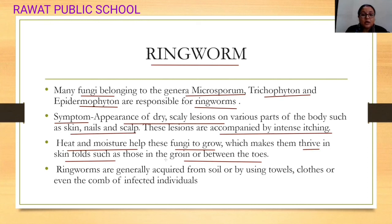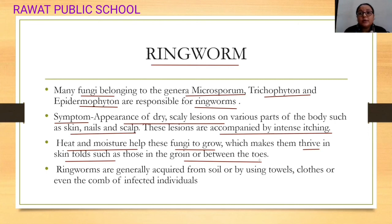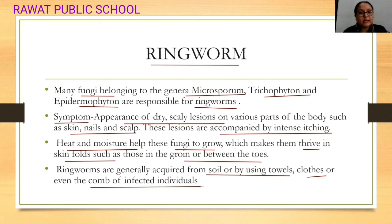Ringworms develop in the groin area, which is present under the thighs and genital organs — the skin fold of the thighs and genital organs — because of sweating. These ringworms are generally acquired from the soil, or by using the towels, cloths, and combs of an infected person. It is very contagious, so avoid sharing personal belongings.